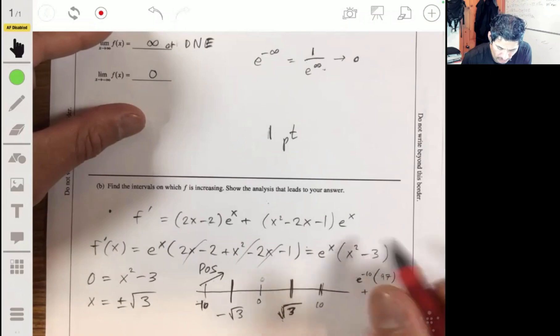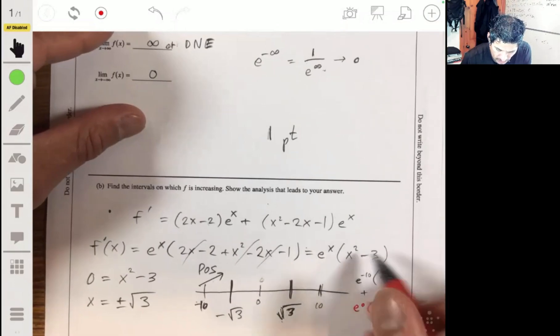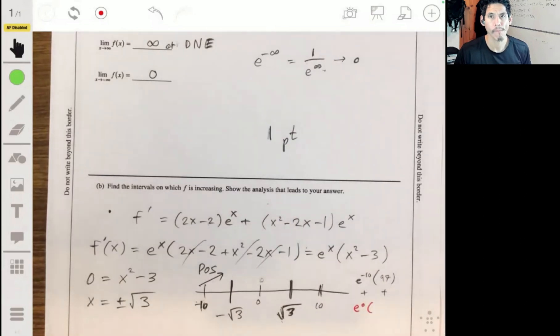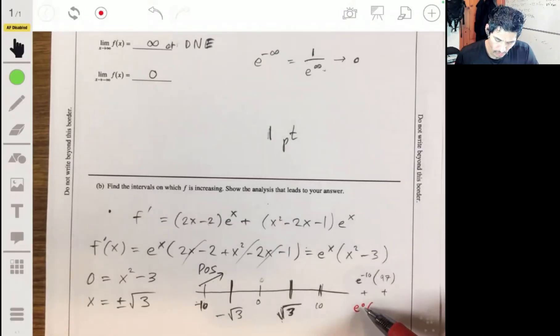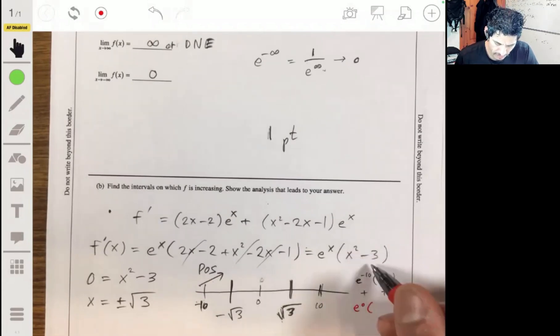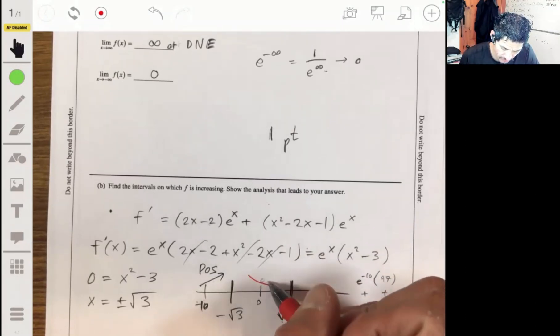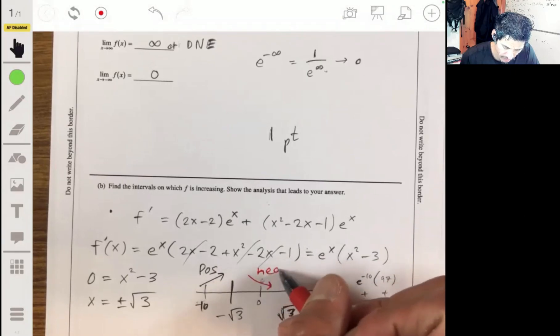Next let's plug in 0. So we have e to the 0 times 0 minus 3, so we have 1 times negative 3, so we have negative 3. So in this interval, we have a negative number or negative behavior going down.